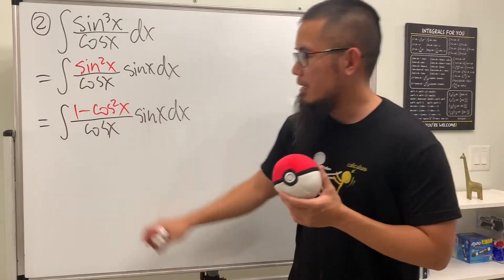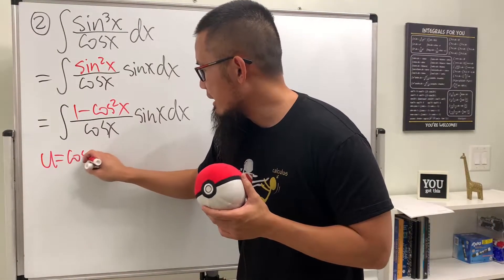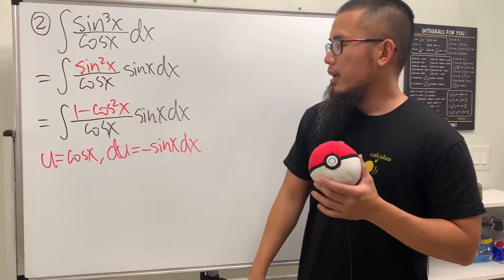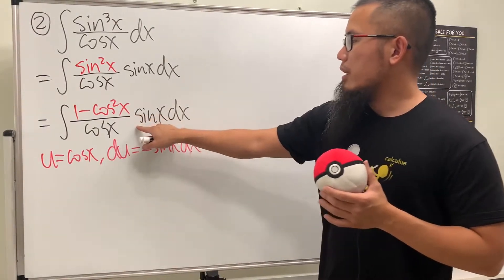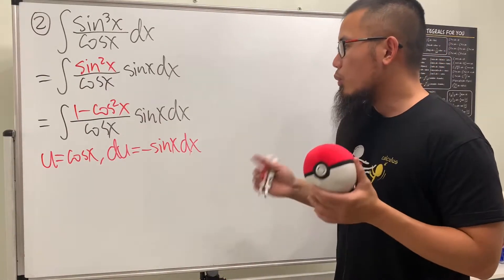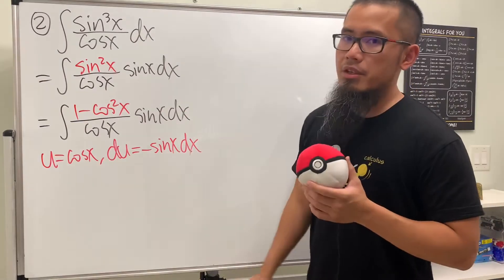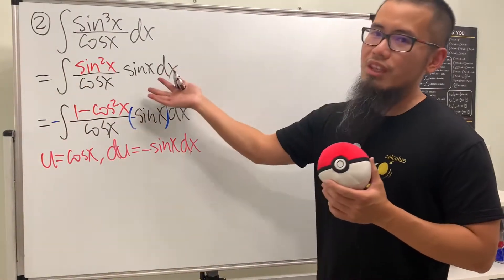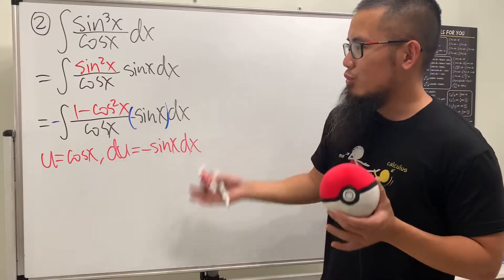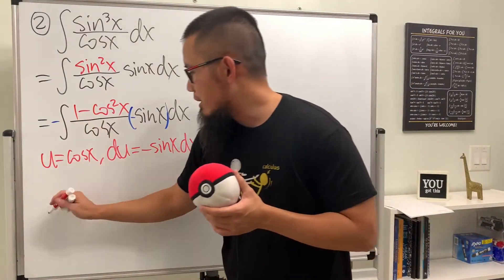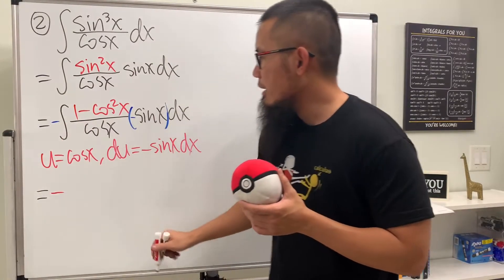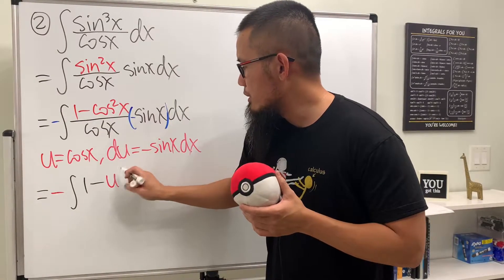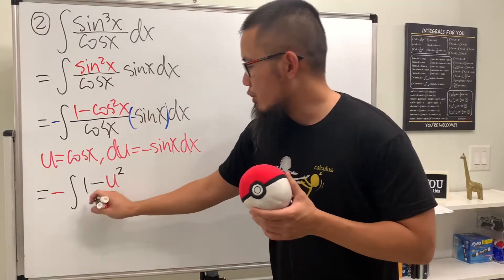Now we can just do u-substitution. Let u equal cosine x, differentiate: du equals negative sine x dx. You see that we have sine x here and negative sine x in du. So we multiply inside by negative and put another negative on the outside, because negative times negative gives positive — just a way to remind you that you have to attach a negative. So we will have negative times the integral of one minus u squared over u times du.